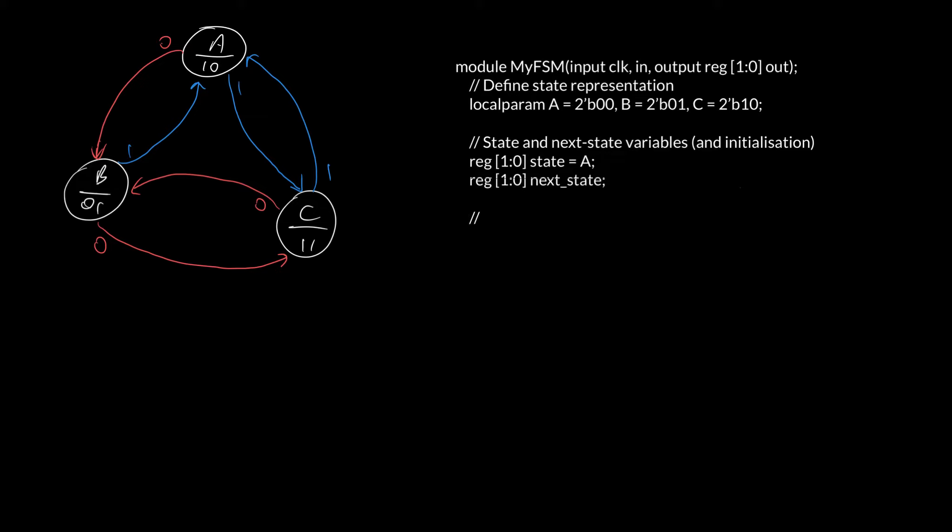Now rule number one, always initialize our state. So what's our starting state? It wasn't labeled, that's a mistake, whoever drew the state diagram forgot to label the starting state. Let's assume we start in state A. So I've got state and next variables and initialization. We now need to have our flip-flops. We're going to have our flip-flops, always at posedge clock state becomes, after an infinitesimal delay, the predicted, the calculated next state.